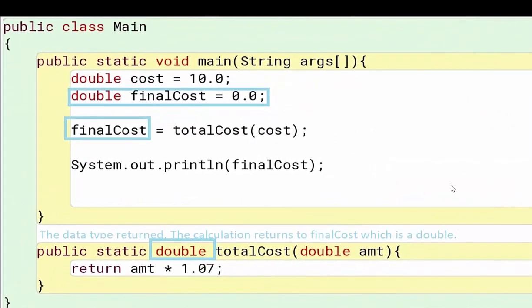Now we're on to the part of the data type being returned by the method. This is what makes our method a non-void method, which means a calculation or value is being returned once the method runs the code. If you take a look at my main method, you'll notice we have public static void, which means it's not returning a value. Down here, I have public static double.